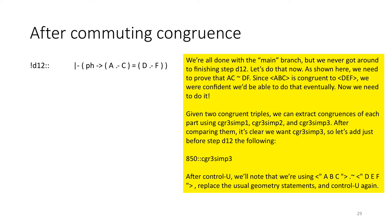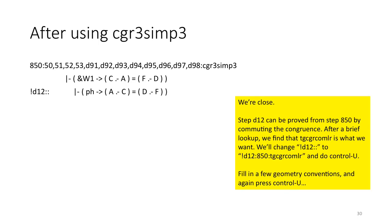After comparing them, it's clear that we want CGR3SIMP3. So let's just add before step D12 the following: A50 CGR3SIMP3. After CTRL-U, we'll note that we'll be using ABC congruent to DEF, replace the usual geometry statements, and CTRL-U again. We're close. Step D12 can be proved from step 850 by commuting the congruence. After brief lookup, we find that TGCGRCOMLR is what we want. We'll change D12 to D12 colon 850 colon TGCGRCOMLR and do CTRL-U. Fill in a few geometry conventions and again press CTRL-U.